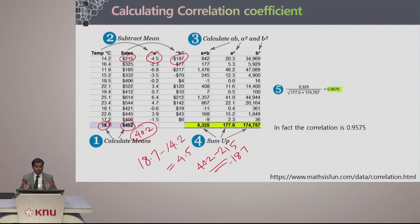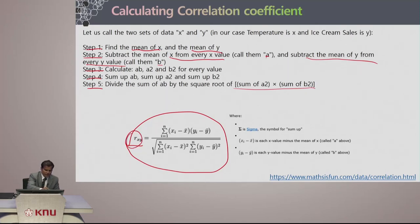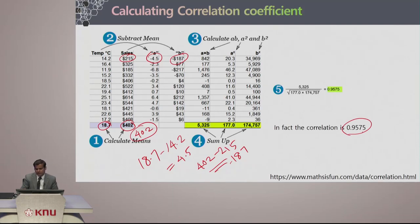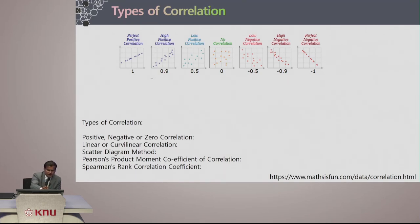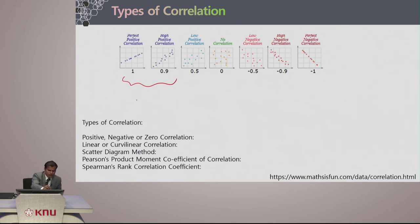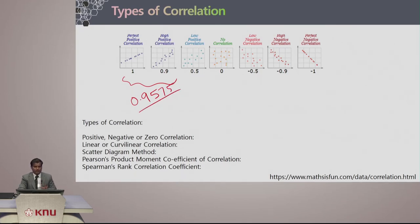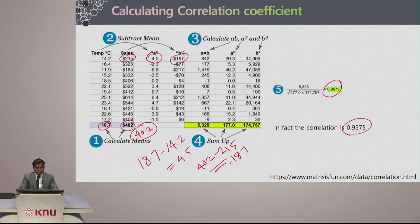We are trying to find a relationship between the two variables — temperature and sales. The correlation coefficient r(x, y) has been calculated to be 0.9575, which is very close to 1. Looking at the correlation chart, 0.9575 falls between 0.9 and 1, which means it is a highly positive correlation.